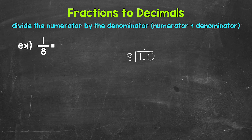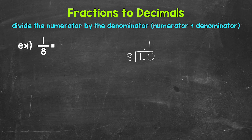Now we can think of this as 10 divided by 8. How many whole groups of 8 in 10? How many 8s in 10? Well, 1 — that gets us to 8. So we put a 1 above the 0, making sure that 1 is above the 0 since we used that 0 and thought of this as 10. That's going to line us up correctly. Now we multiply: 1 times 8 is 8. Subtract: 10 minus 8 is 2.